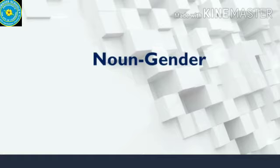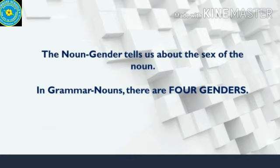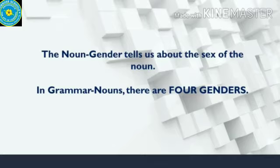What does gender mean? The noun gender tells about the sex of the noun. In grammar, there are four genders. How many genders, children? Four.